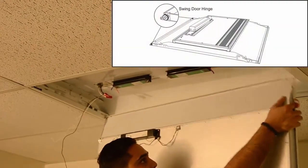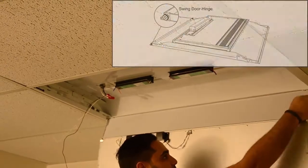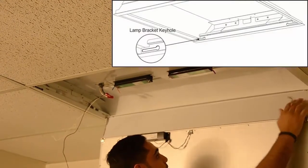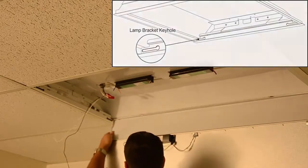Locate the swing door support located on each end of the lamp bracket. Install the swing door hinges into the keyholes on the lamp brackets.